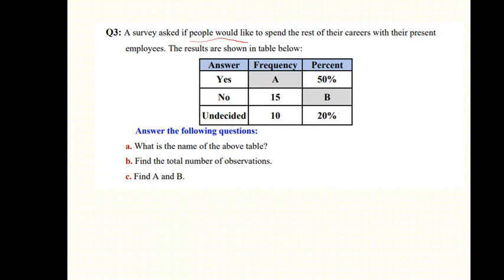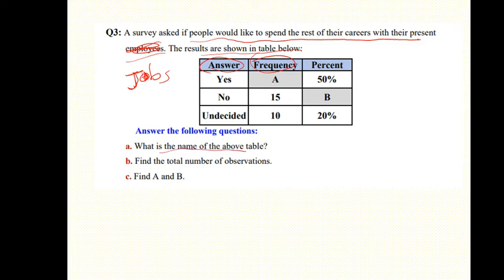A survey asked if people would like to spend the rest of their careers at their present jobs. Results are shown in a table with answers and frequency. The answers are not numbers, so the table type is categorical frequency distribution.